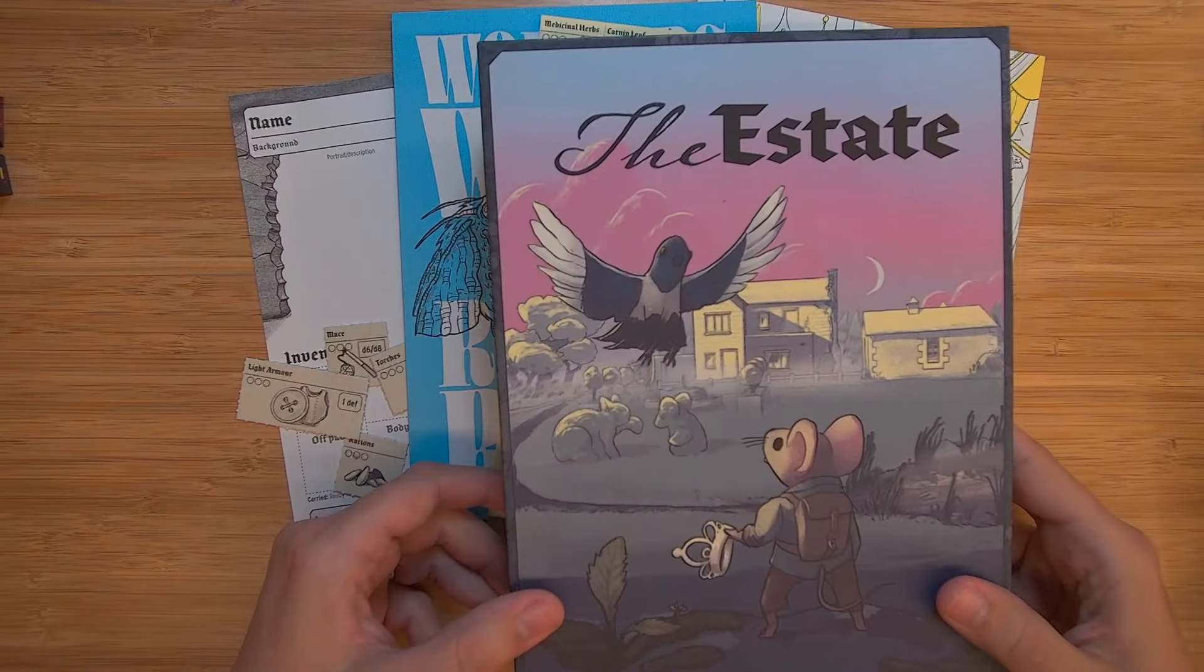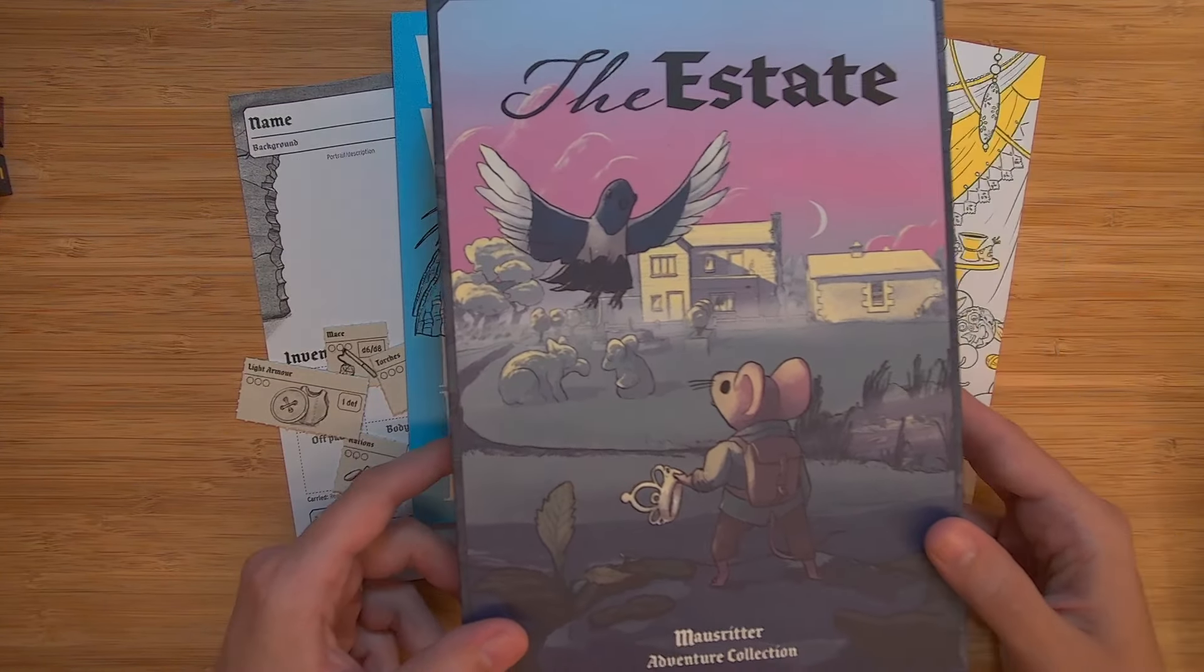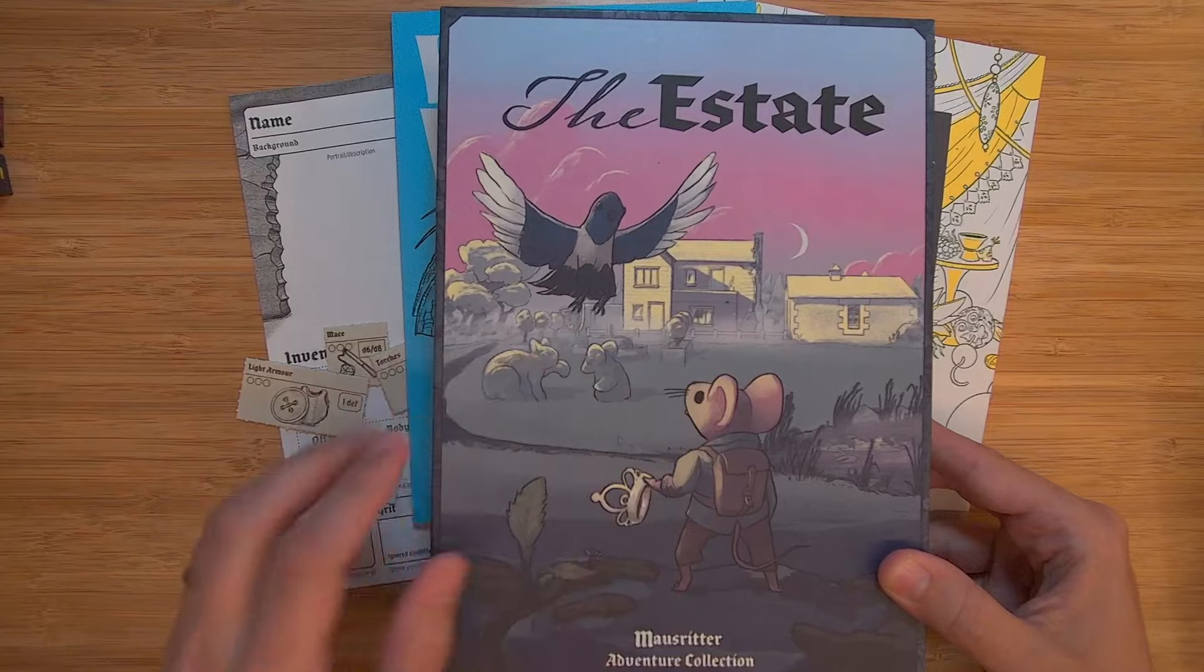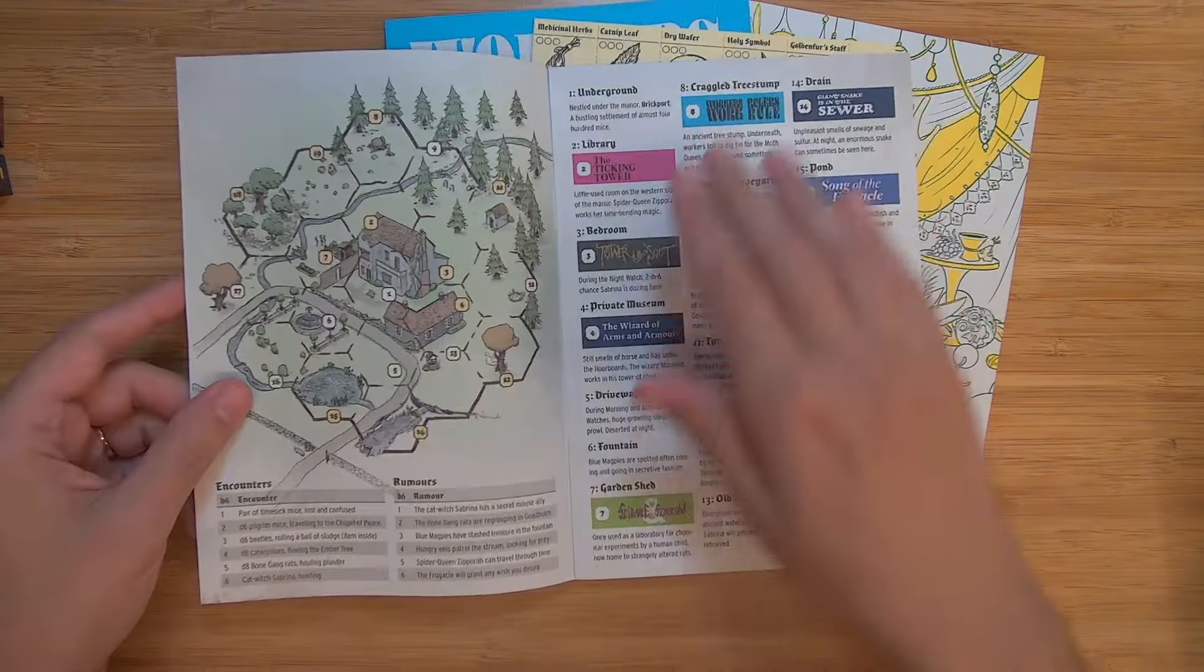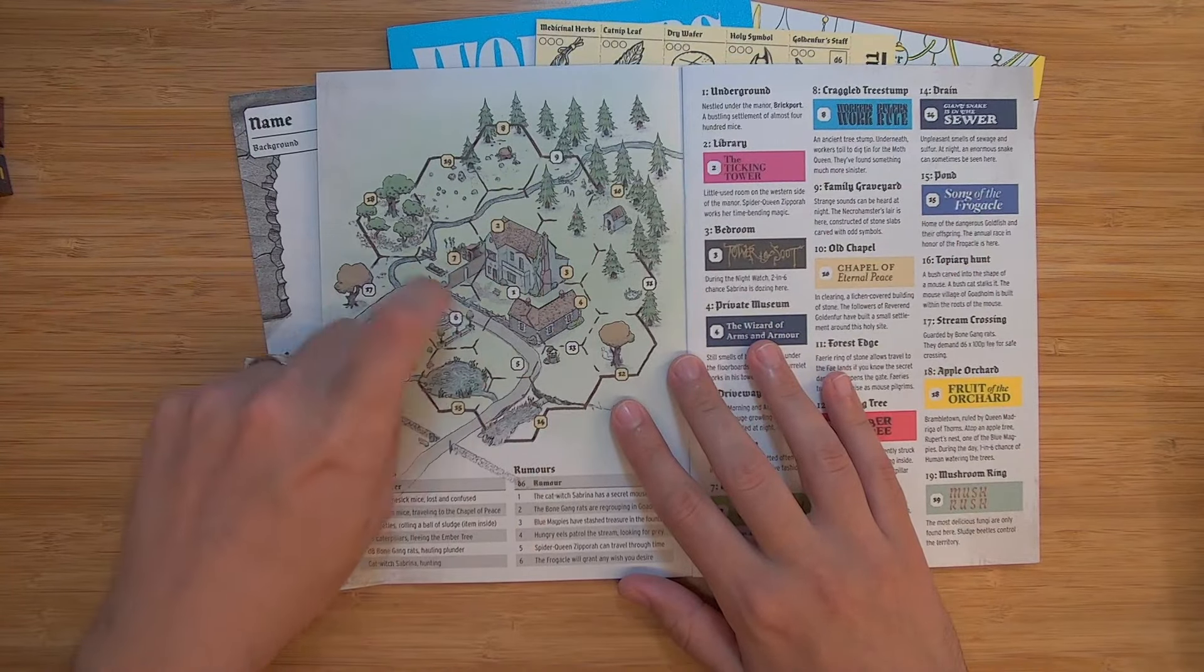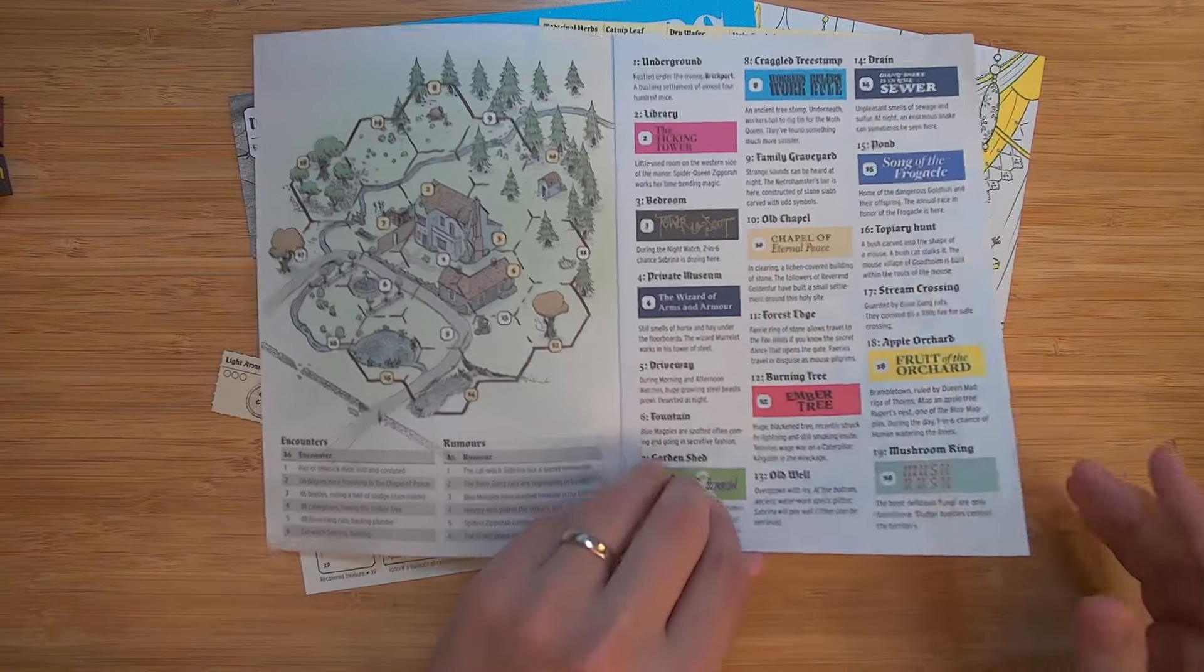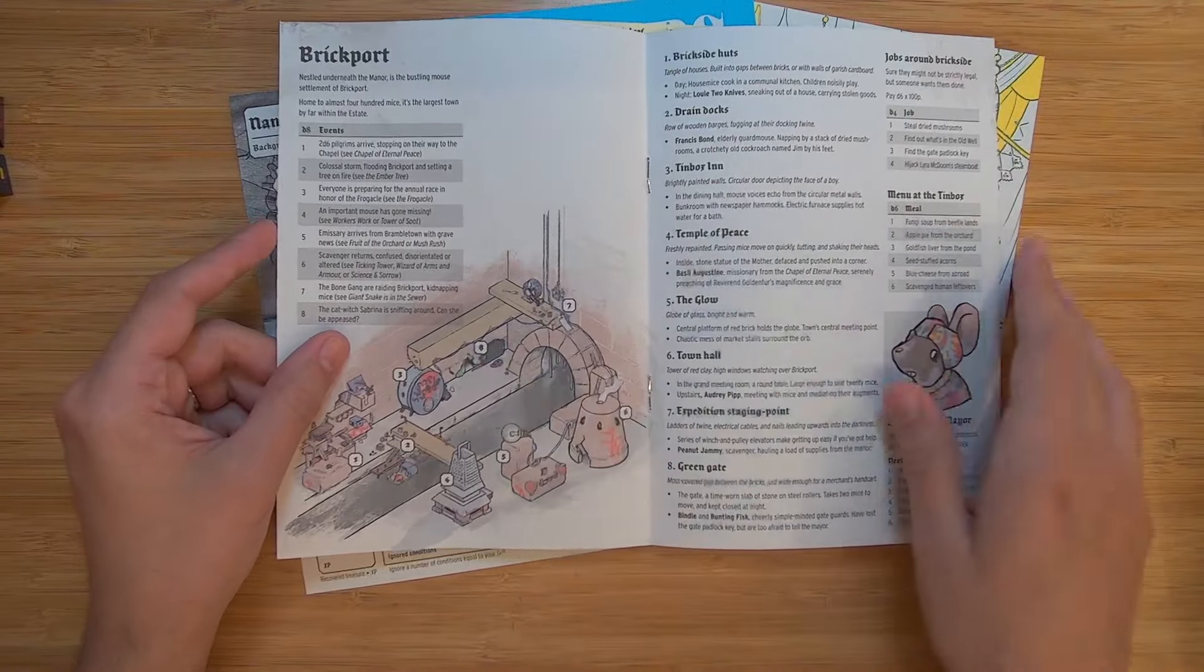This box set is the estate and it gives you basically even more. So the initial box that comes with the core rules and a bunch of character sheets and sort of a few adventures, but this is an extra box set that comes with even more adventures if you're into that kind of thing. And it talks about, it explains that this is where you are and I believe you live sort of under this house here and you can travel to all these different areas and this is how all of these adventures are connected. These are just the different adventures. You can roll for them. There's the rumors, and this explains what Brickport is, and all of the different little locations in Brickport. And look, there's Audrey Pipp, the mayor.